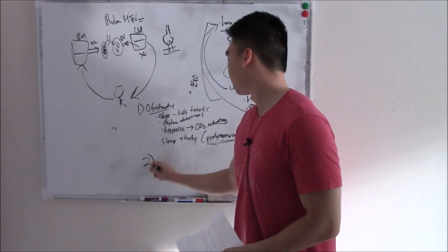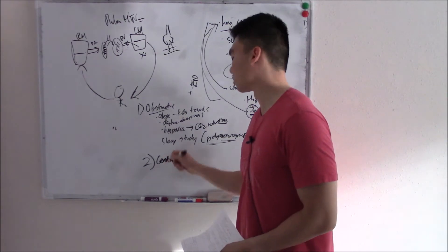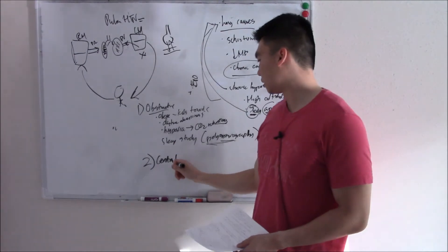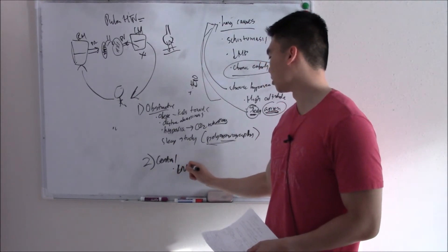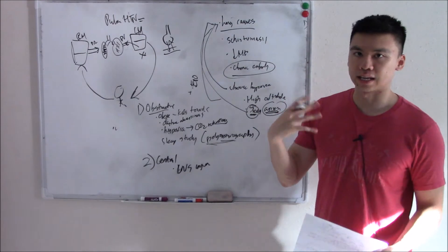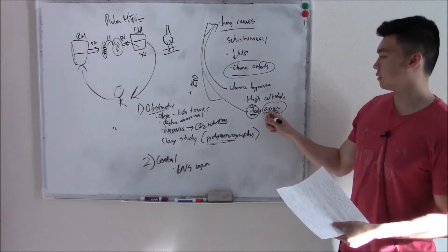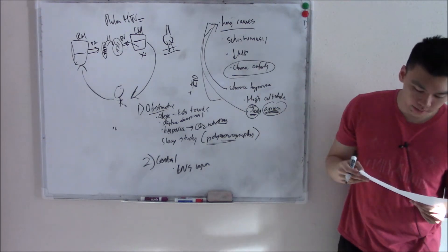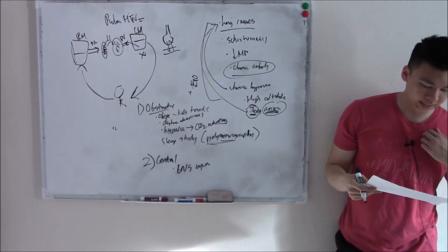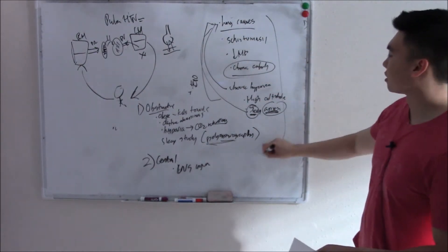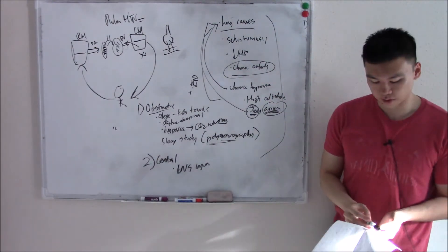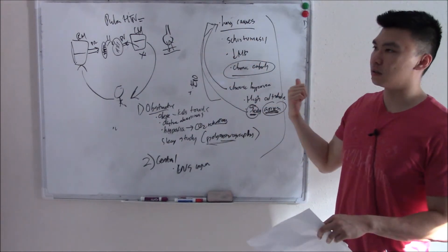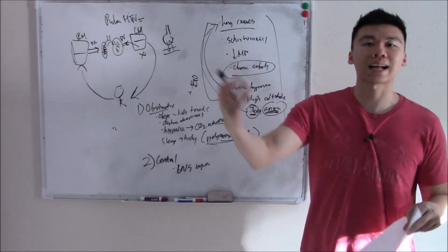You can also have central sleep apnea — central meaning it comes from your brain, from your respiratory center. Look in the history for CNS injury. If something's wrong with your respiratory center, you get periods of not breathing when you're sleeping; the respiratory center shuts down and you just stop breathing. These are all secondary causes of pulmonary hypertension — you get sleep apnea or lung pathology and as a result you get pulmonary hypertension.